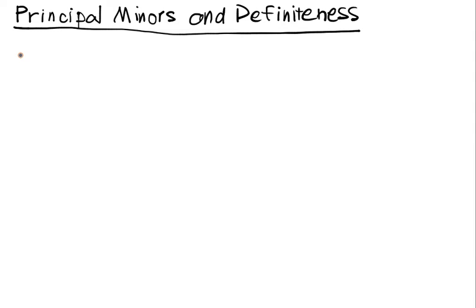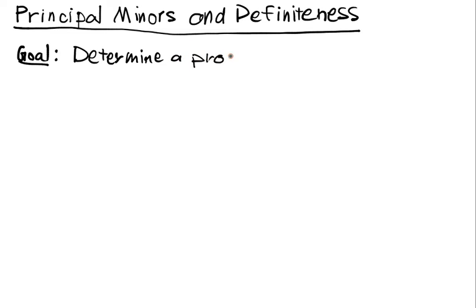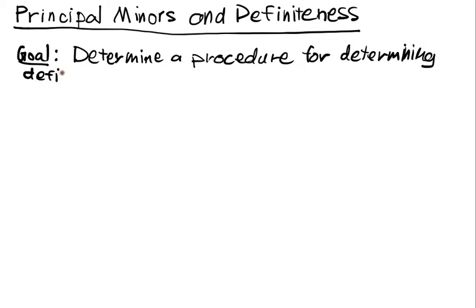But we want to figure out how to characterize general matrices. So the goal is to determine a method, or a procedure, for determining definiteness. We need some definitions to start.